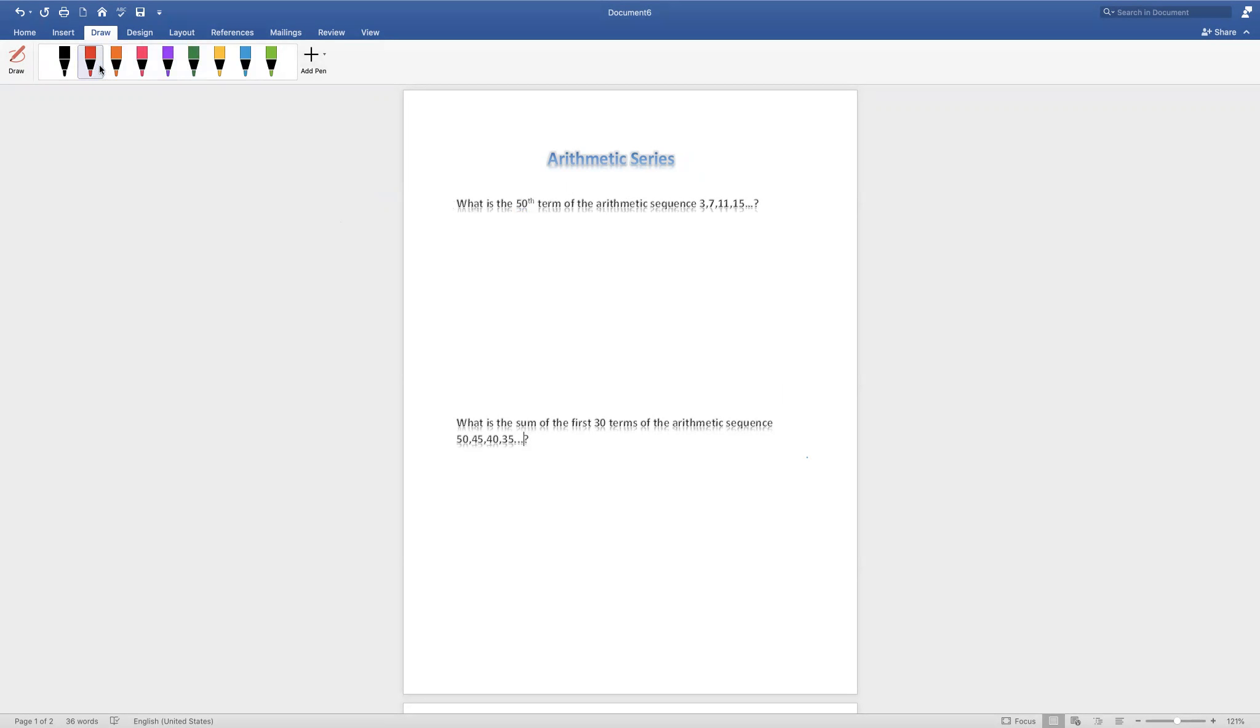To solve this, it would take a long time to actually write out all the 50 terms. So instead, we're going to use a shortcut. We're going to use a formula to find the nth term, and in this case, it's the 50th term. Let me write it down. an equals a plus n minus 1 times d.